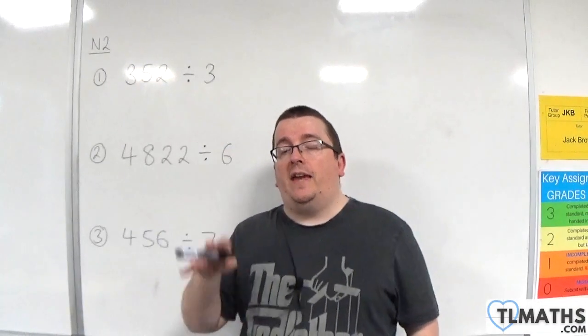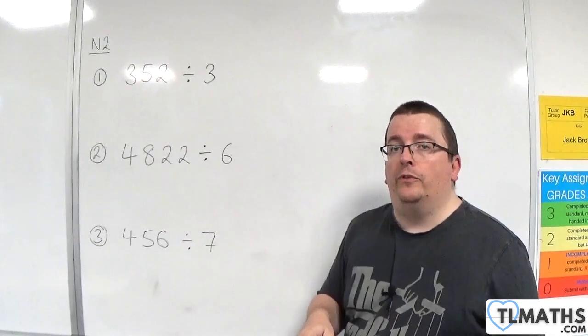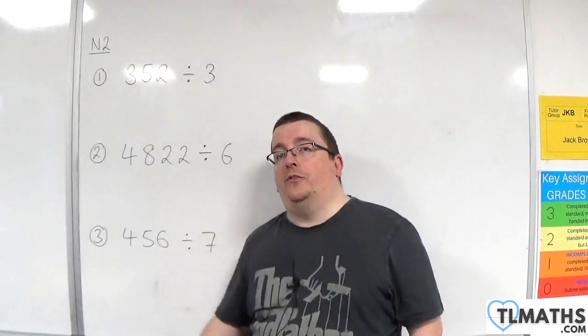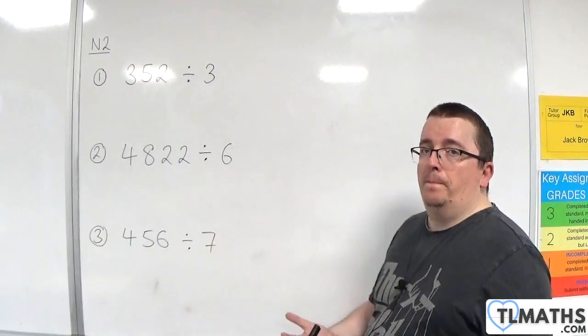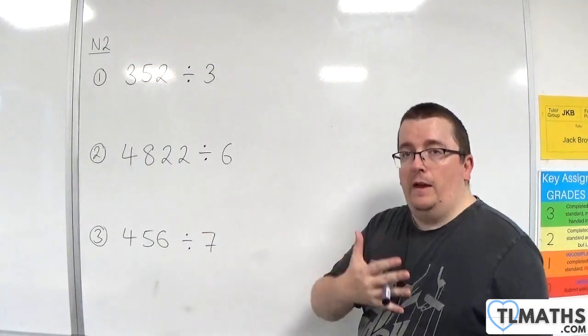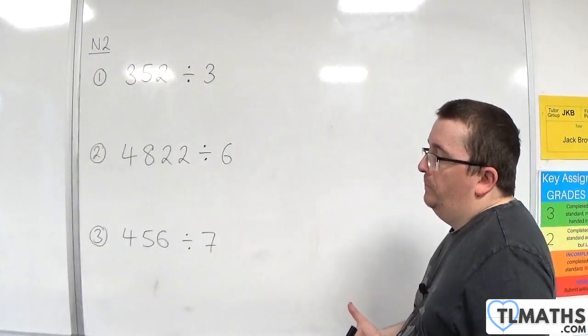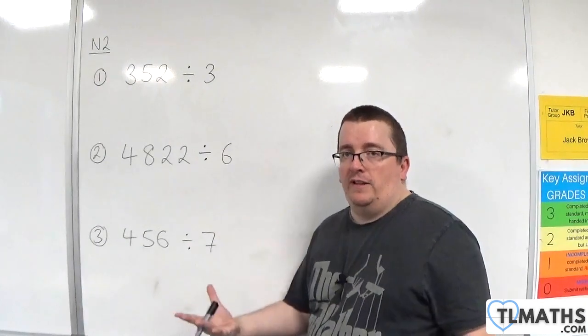In the previous video, I was careful to choose three examples where we ended up with a terminating decimal, where we ended up at a stage where the remainder was zero and there was no point continuing. With each of these examples, however, we end up with a recurring decimal.